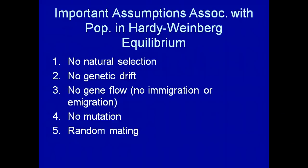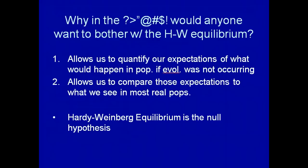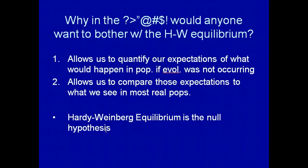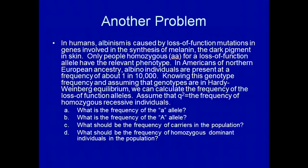So what Hardy-Weinberg essentially states is that it's a way to predict allele frequencies if absolutely nothing has impacted the population, which realistically doesn't happen in most populations. Why bother with it? The equilibrium equation allows us to quantify our expectations of what would happen in a population if evolution was not occurring, so we can compare those expectations to what we see in real populations. The Hardy-Weinberg equilibrium, as we discussed in our paper discussion last week, is the null hypothesis. We expect most populations will deviate from Hardy-Weinberg equilibrium.